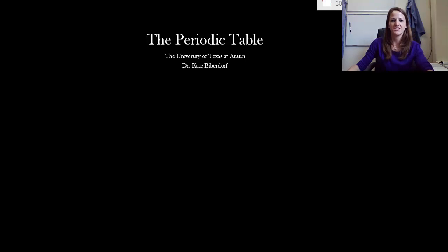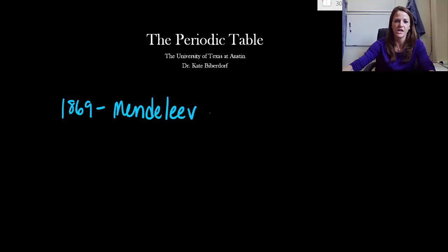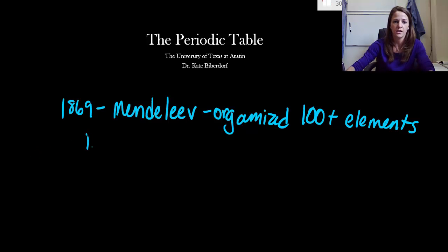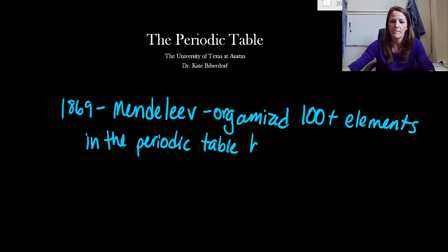Hi everyone. In this video we're going to talk about my favorite table, the periodic table. Let's start off at the very beginning here. In 1869, Dimitri Mendeleev organized, we're going to say 100 plus elements. There weren't that many at the time, but now there's definitely over 100 plus elements in the periodic table. And this is the most important part right here: by their properties.